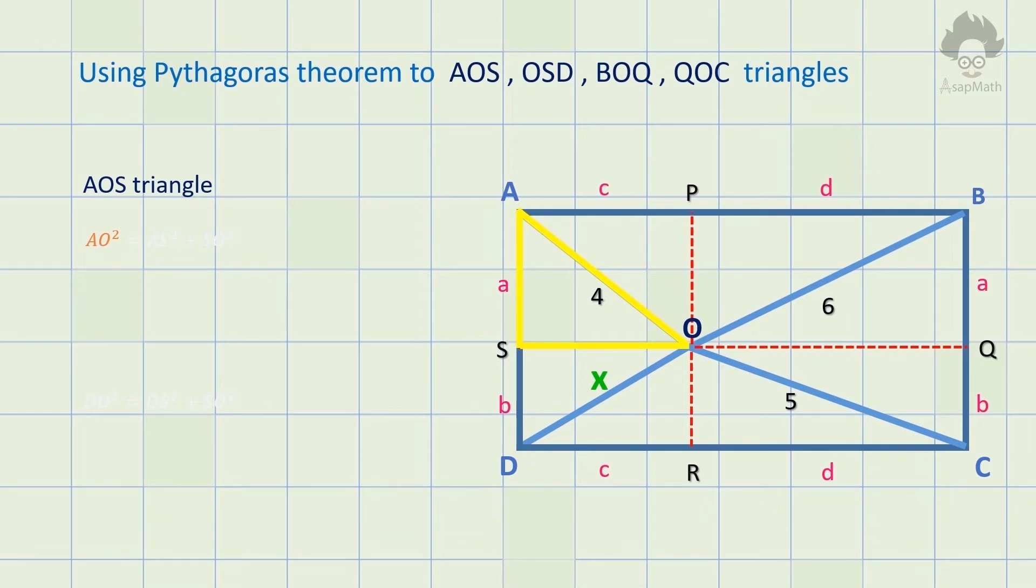AO squared equals AS squared plus SO squared, so 4 squared equals a squared plus c squared and name this as equation 1. Then consider OSD triangle.